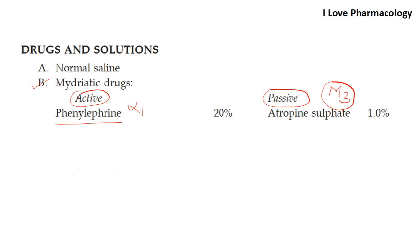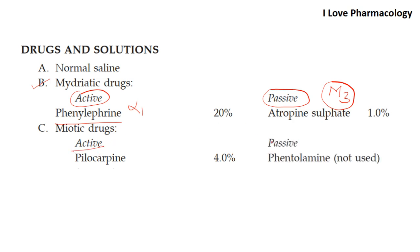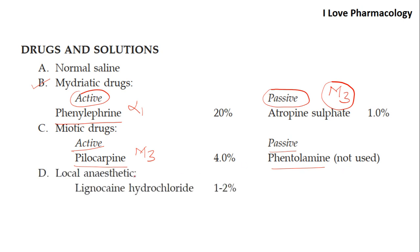There are two mydriatics: active and passive. Active meiosis is produced by pilocarpine, a muscarinic drug acting on M3 receptors to cause pupil constriction. Passive meiosis is produced by phentolamine, an alpha-blocker — though this passive miotic drug is not currently used. For local anesthetic, you will use lignocaine hydrochloride.